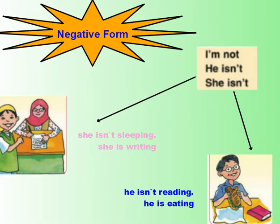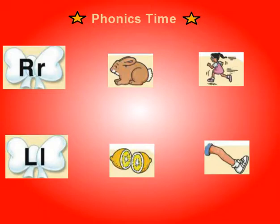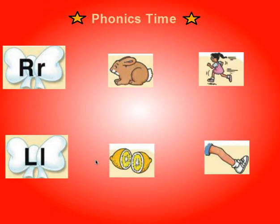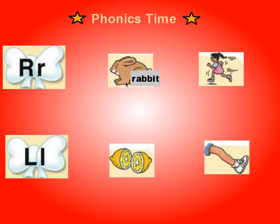Let's move to phonics time. Today we have two letters: R and L. R makes the sound R, like rabbit, run. And L makes the sound L, like limb, lick. R — ra — rabbit, run. L — la — lick, lemmy.